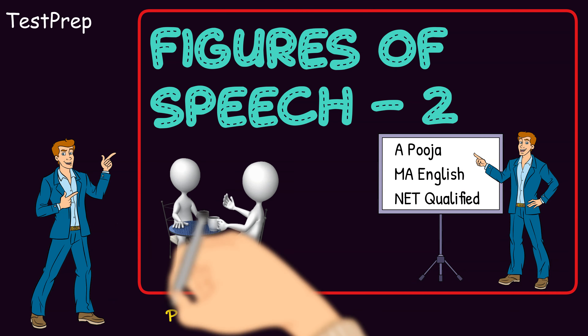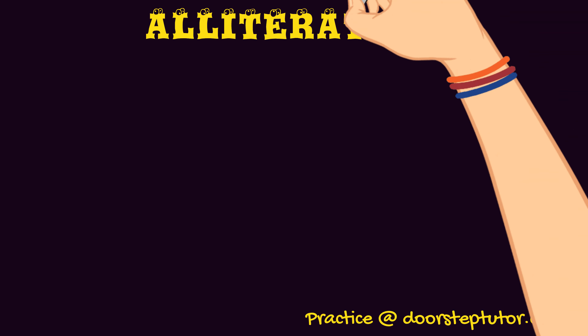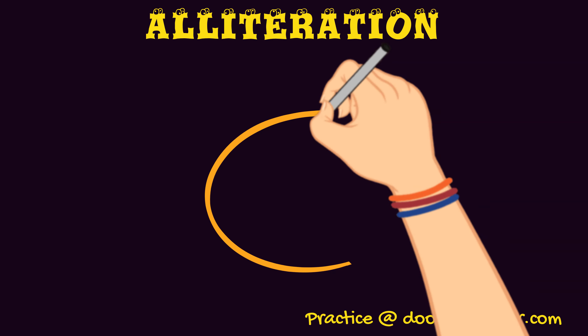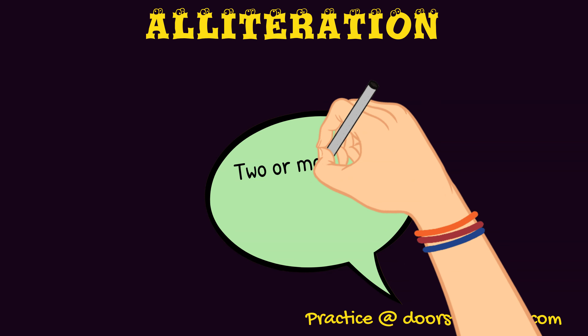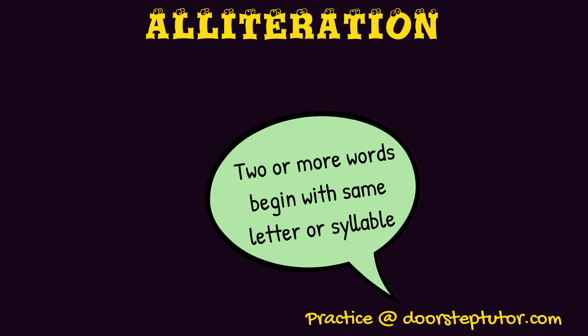The first figure of speech we are going to look into is alliteration. In this figure of speech, two or more words begin with the same letter or syllable. Simply to say, they have the same consonant sound. So in a sentence, when you have the same consonant sound in words, then you can take it into account as alliteration.